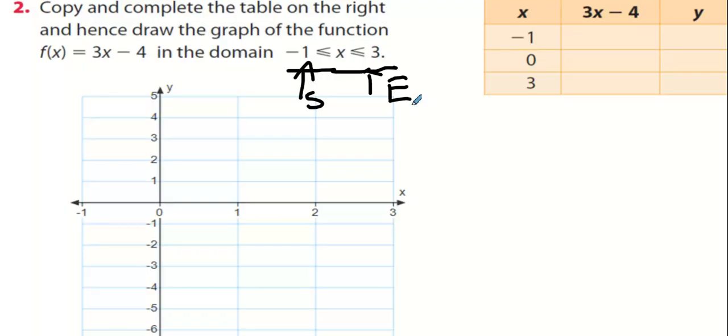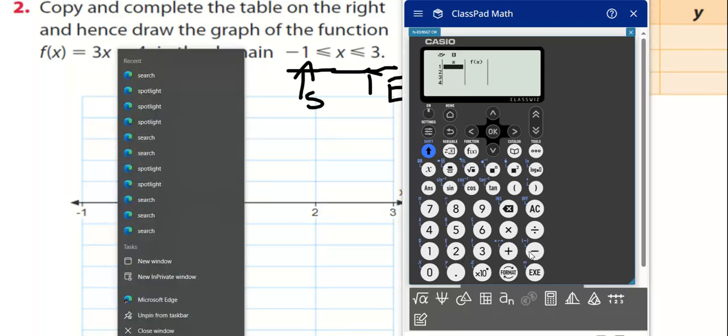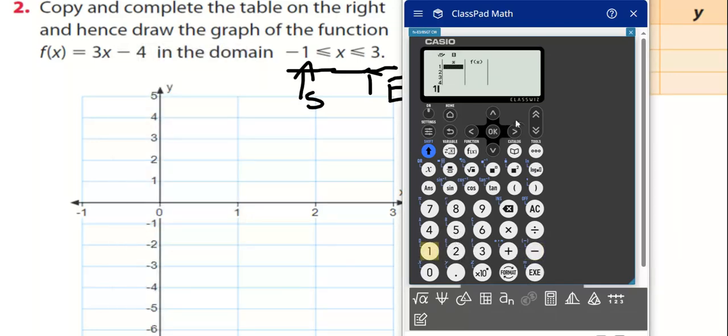I want you now to start typing in your numbers. Start with minus 1. I think you have to press 1 and then go back and press minus. Then if you want a shortcut, you can just press plus and it does it all for you. See that? 1, 2.